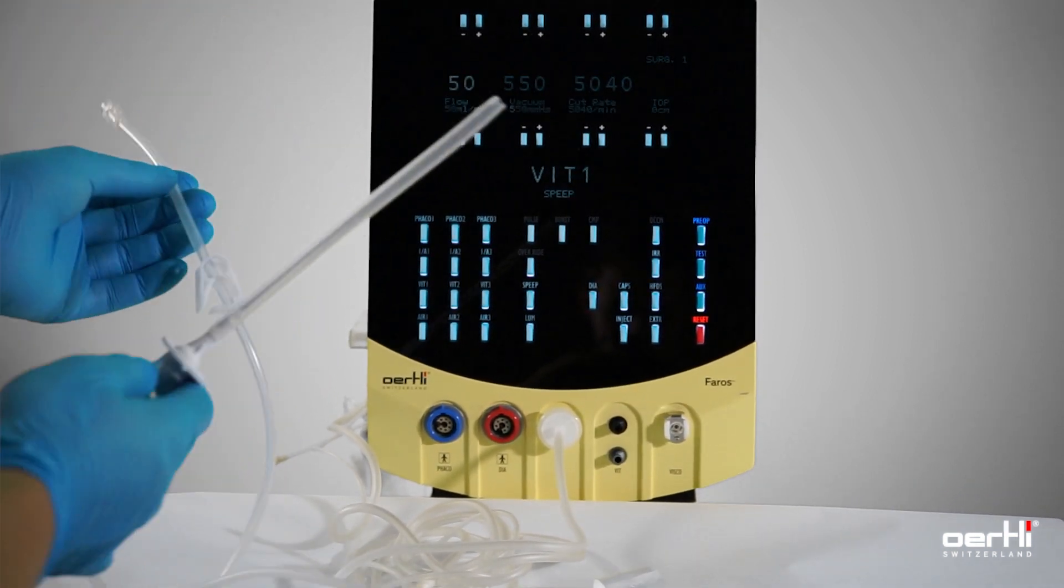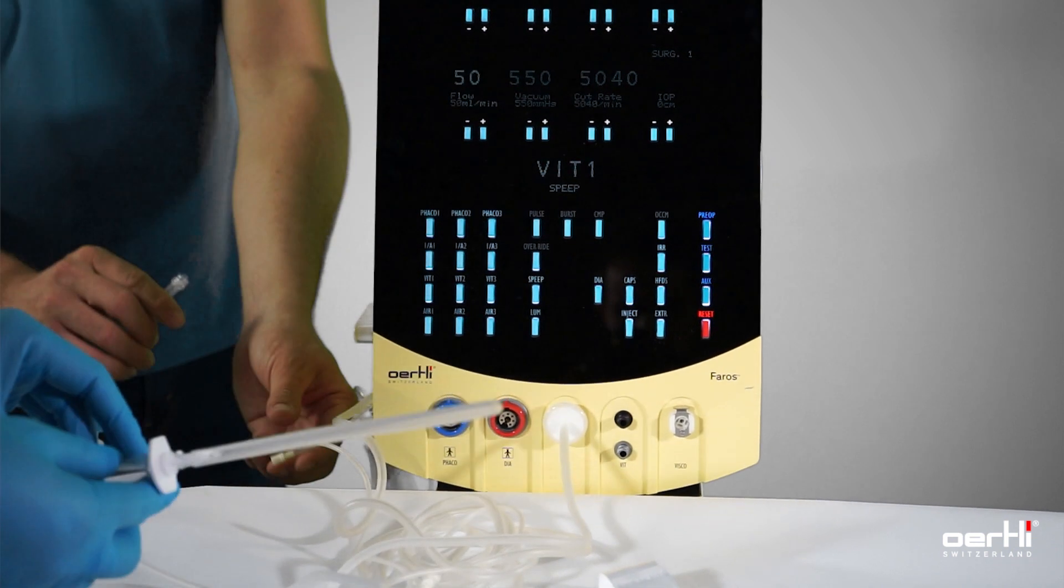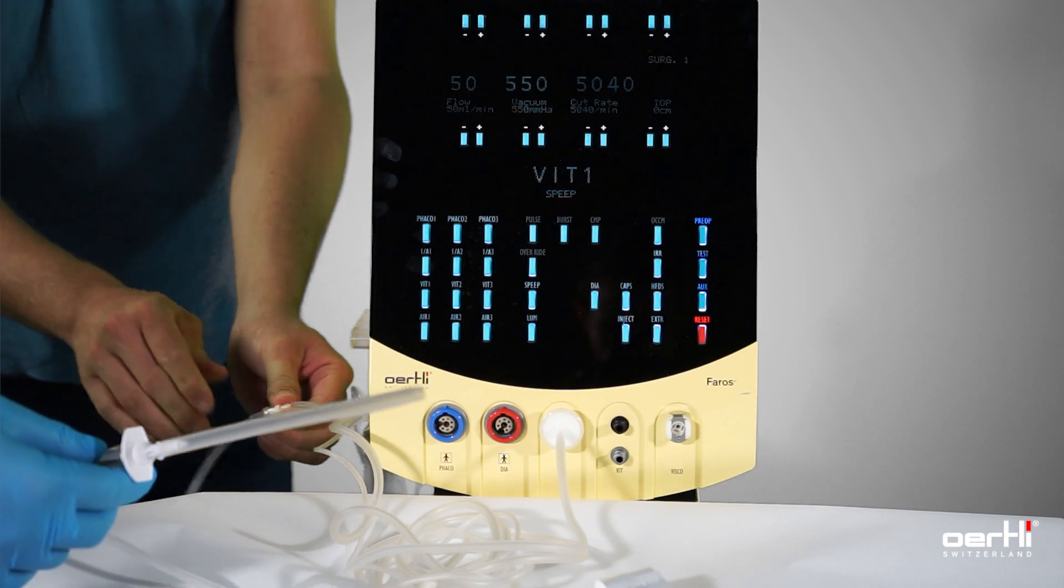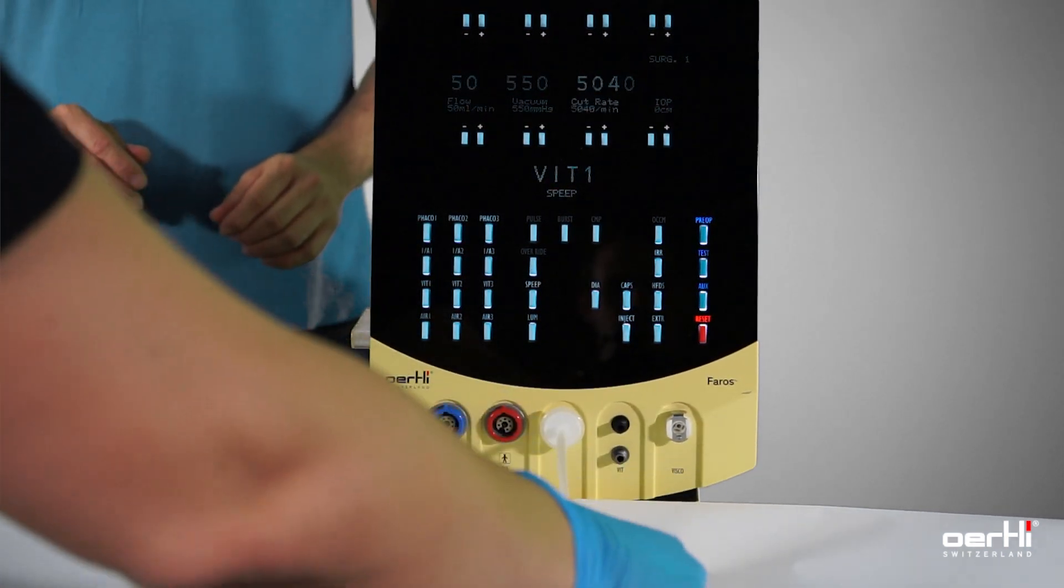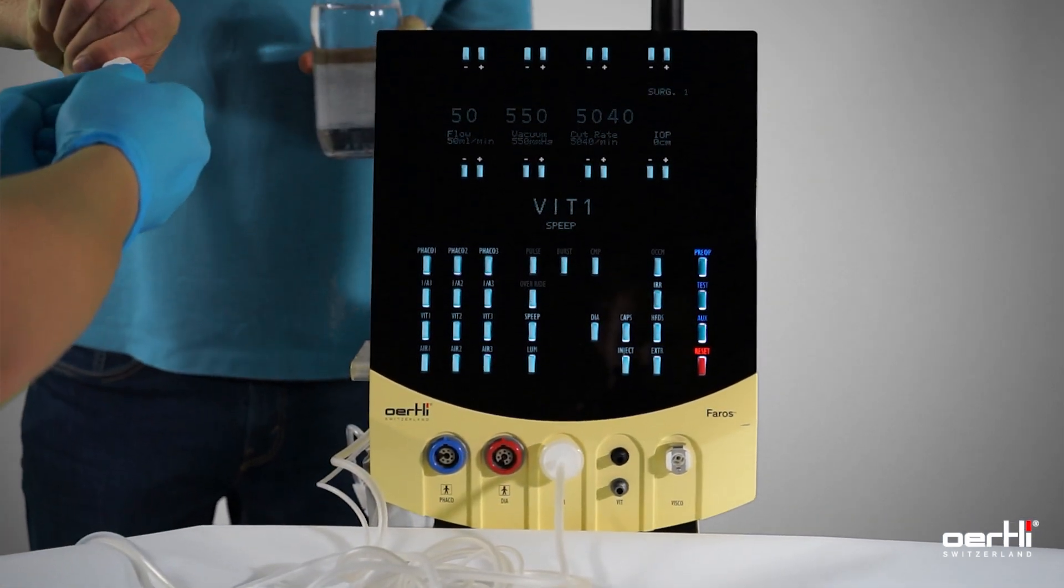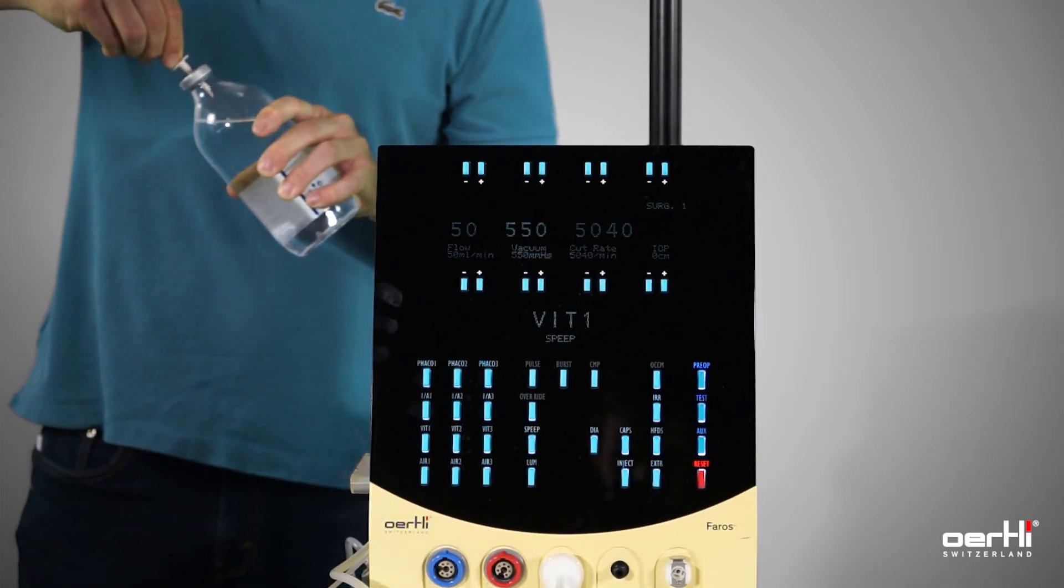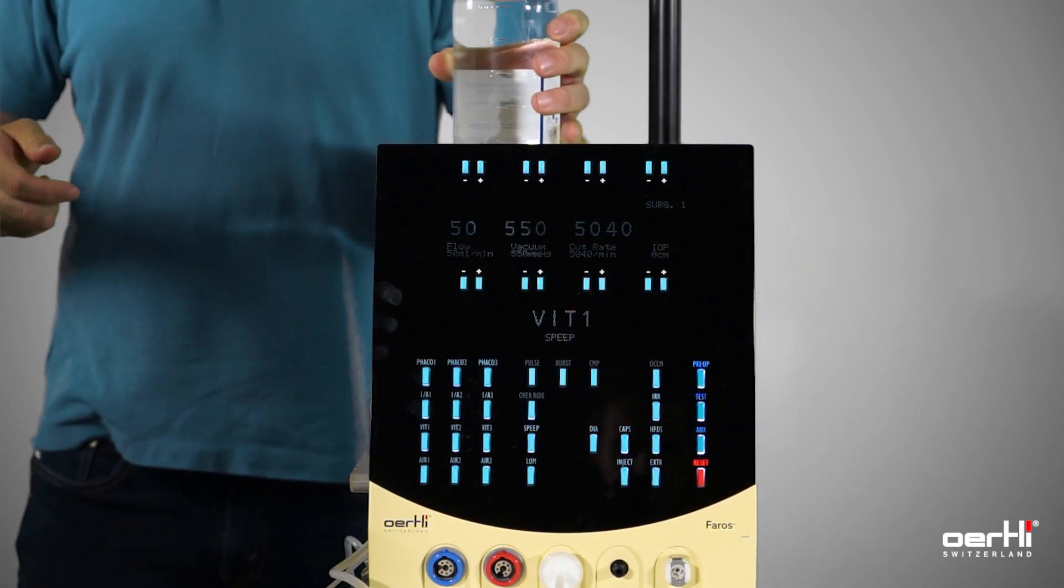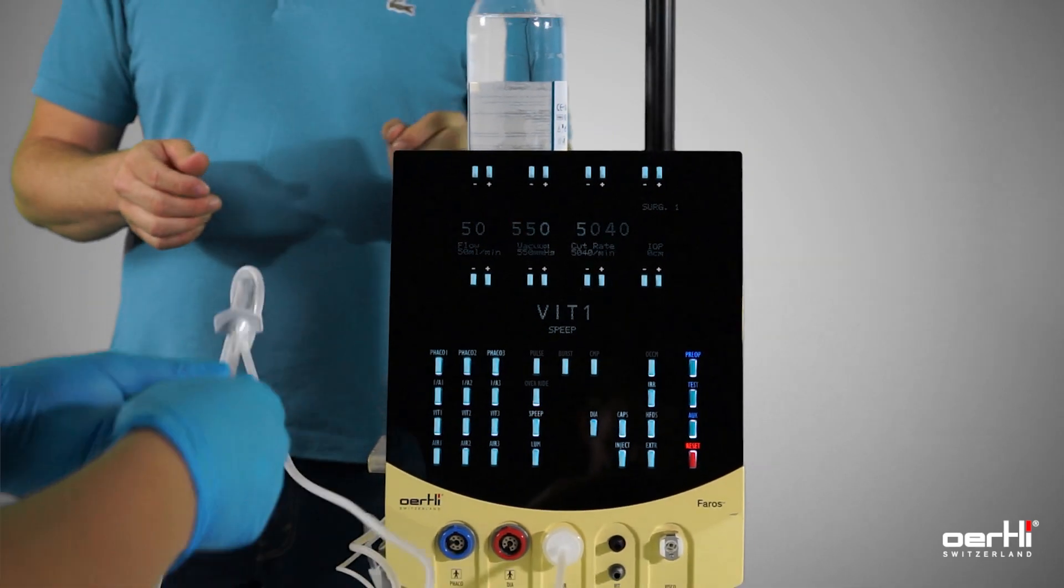Hand it over to your jumper and let him do the connection. Then hand over the piercer. Pierce the bottle, and then hand over the giving set.